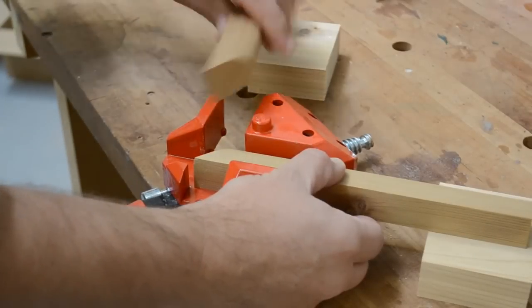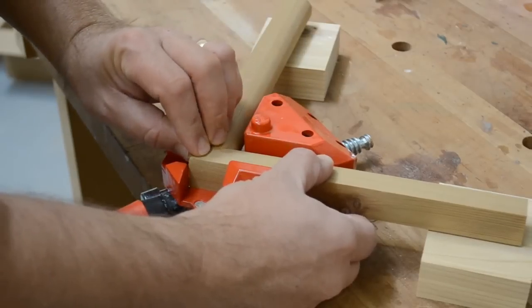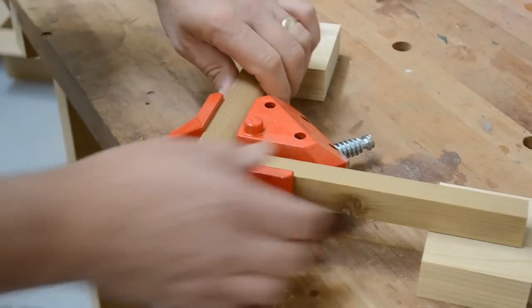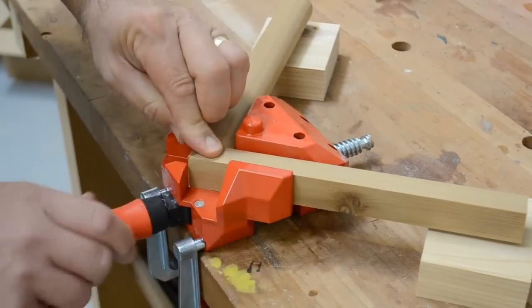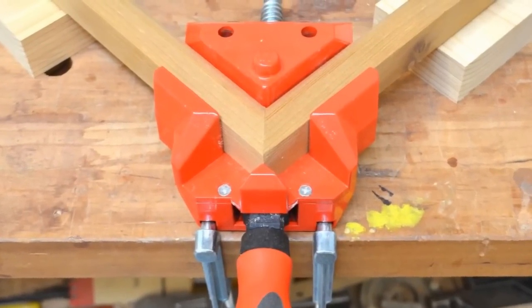This makes clamping miters particularly easy. The clamp can be snugged up, the parts adjusted, and then firmly clamped once they're in place. The result is perfect gap-free miter joints.